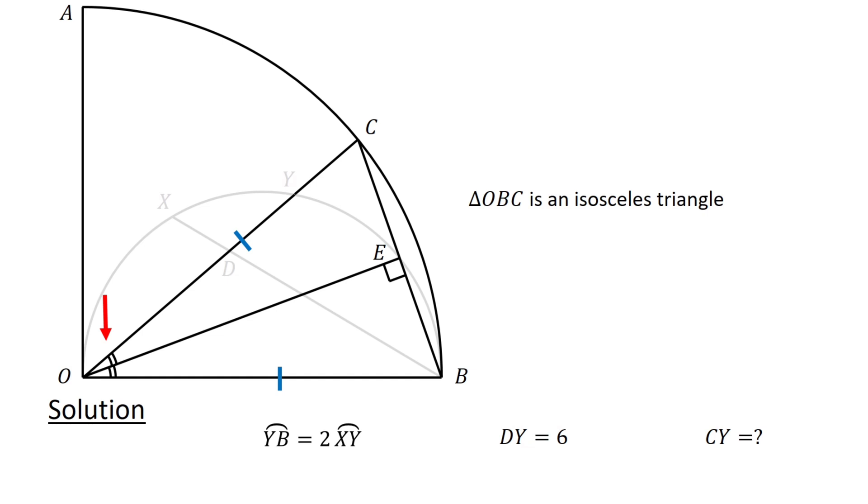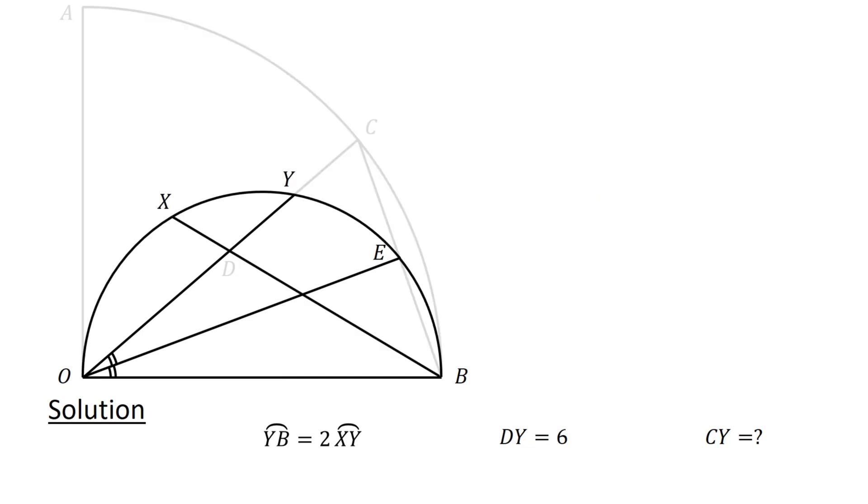Following this, consider the lines BX, OY and OE and the semicircle. So, arcs YE and EB are subtended by equal angles at the circumference. Recall that arcs subtended by equal angles at the circumference are equal. Therefore, we have arc YE equals arc EB.